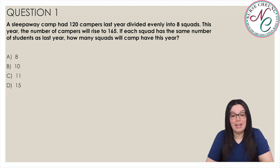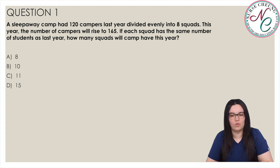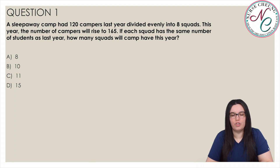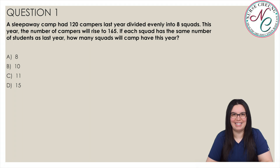Question 1. A sleepaway camp had 120 campers last year divided evenly into 8 squads. This year the number of campers will rise to 165. If each squad has the same number of students as last year, how many squads will camp this year? Is it A, 8; B, 10; C, 11; or D, 15? And the correct answer is C, 11.